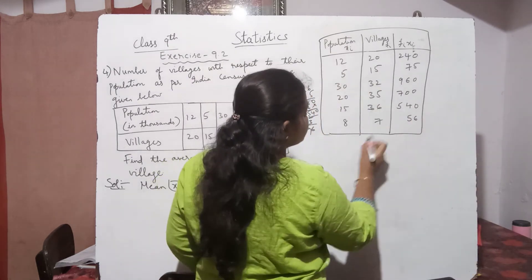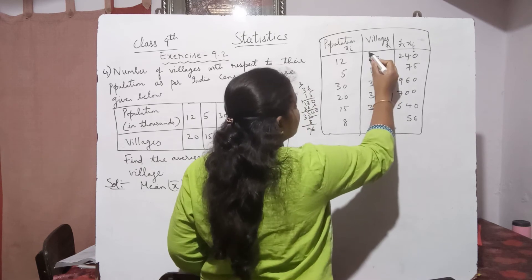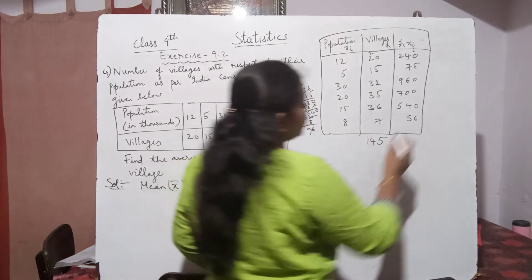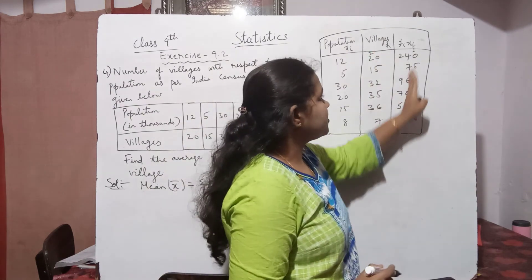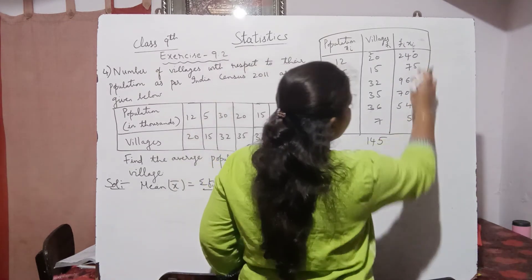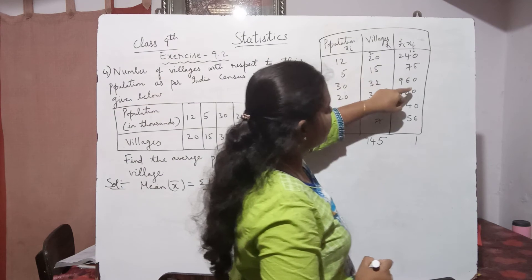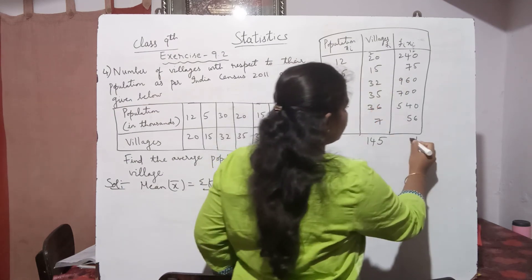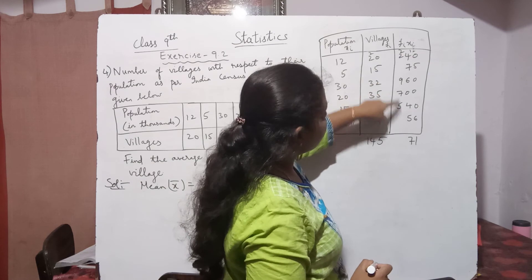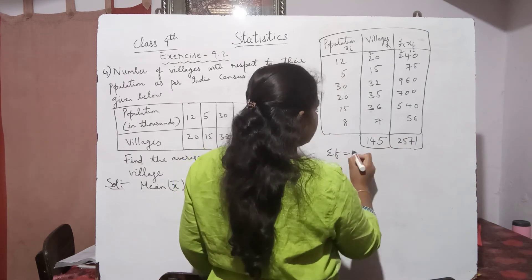Now add the fᵢ column: 20 + 15 + 32 + 35 + 36 + 7. When adding, align units, tens, and hundreds digits properly. This gives Σfᵢ = 145.